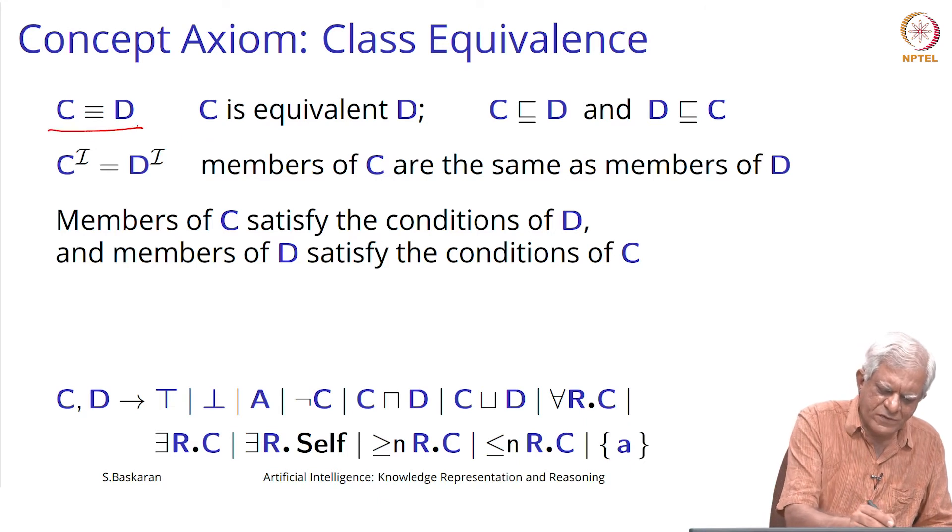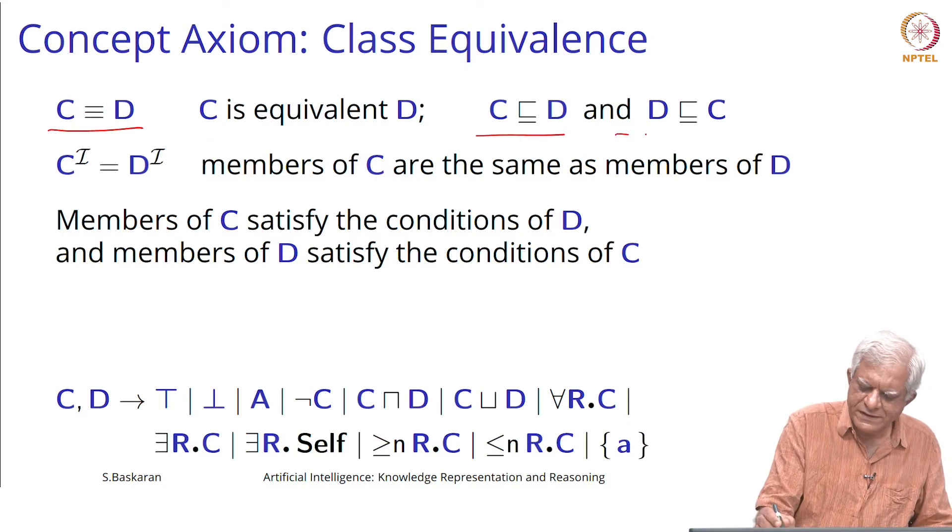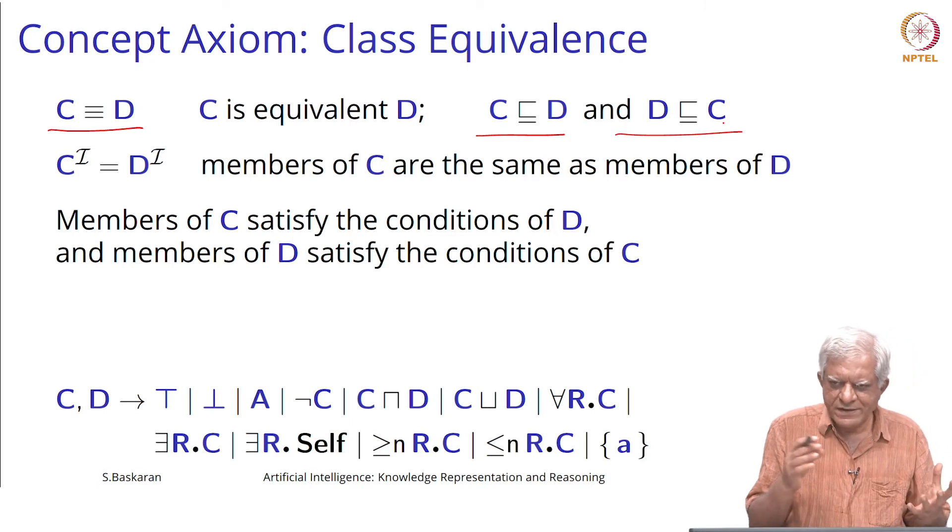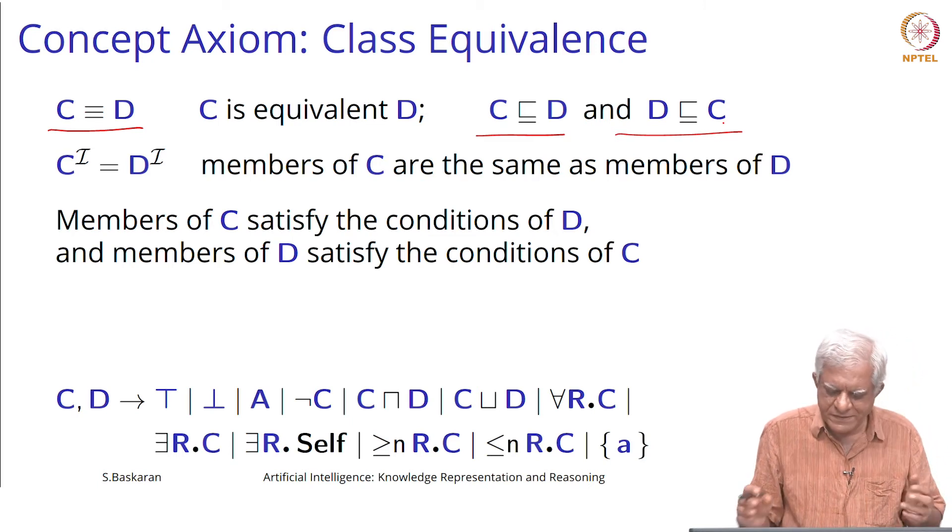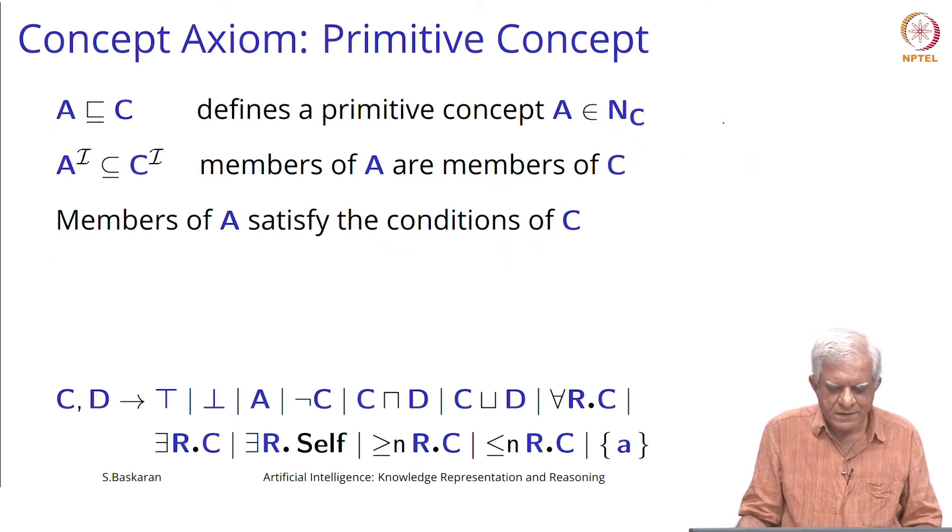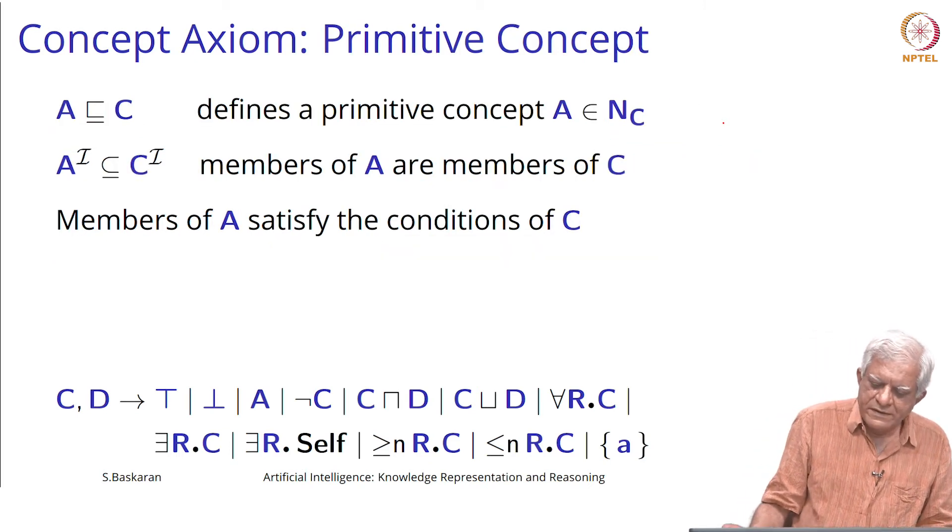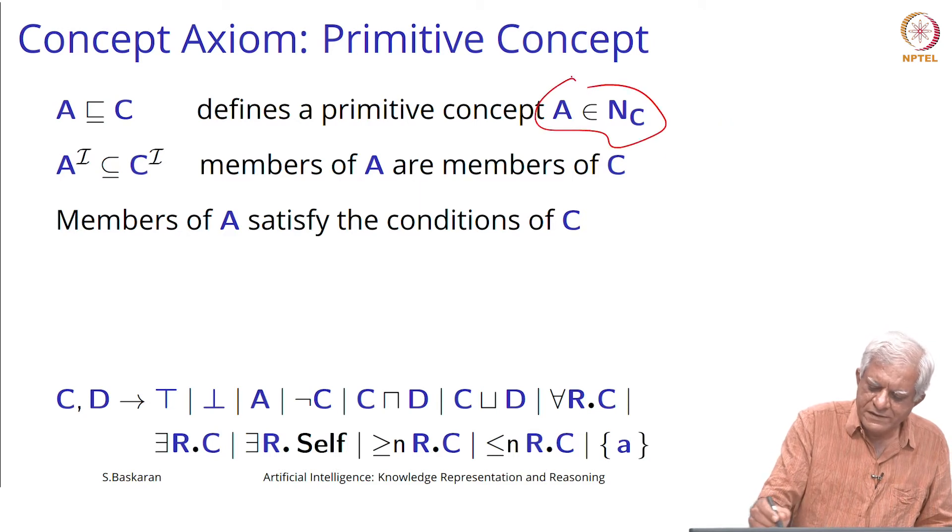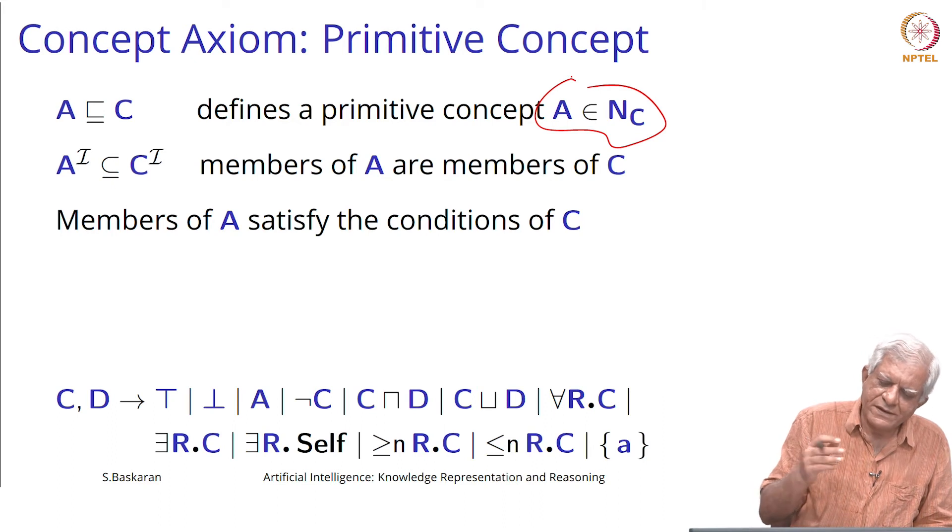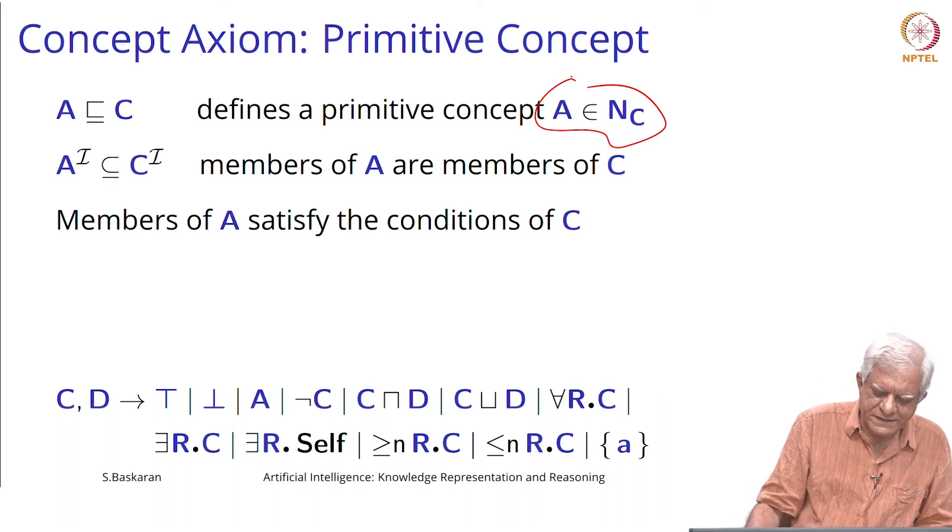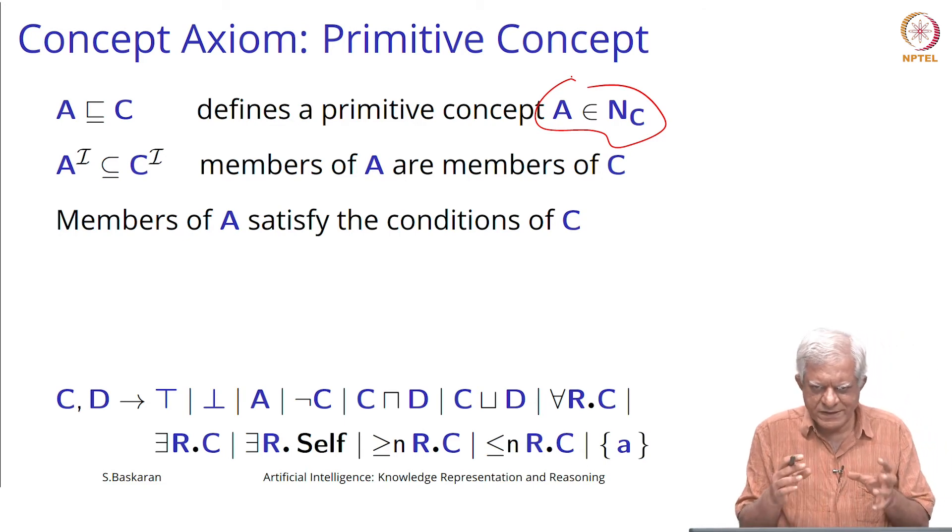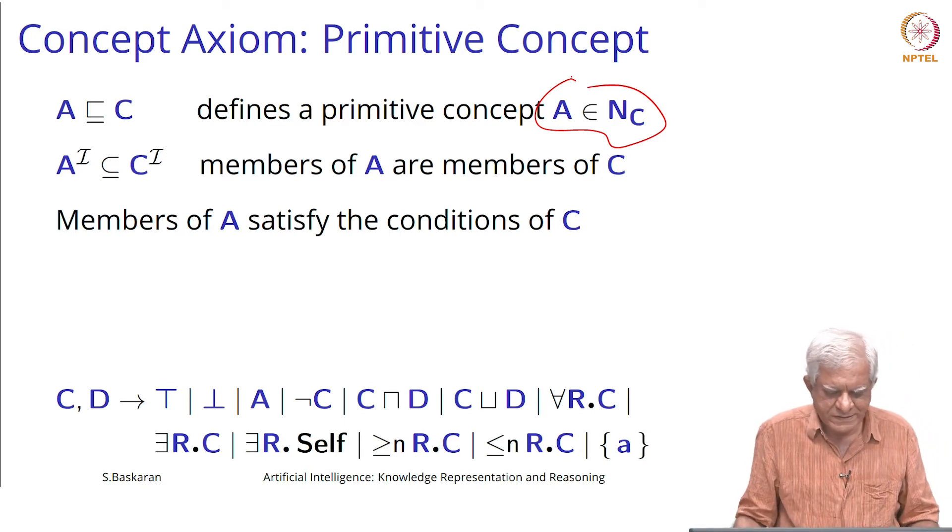C is equivalent to D, it is basically saying that C is subsumed by D and D is subsumed by C. They are the same concepts with different names. We can define a primitive concept and give it a name and say it is a subset of this concept C. As we will see, we can use it to define this thing, but we cannot use it in reasoning very easily.